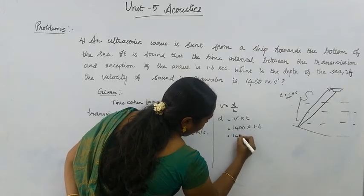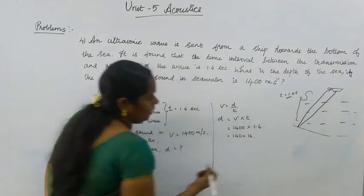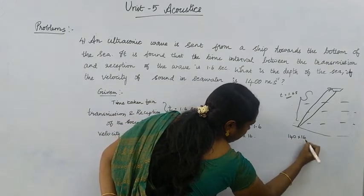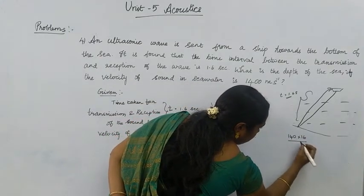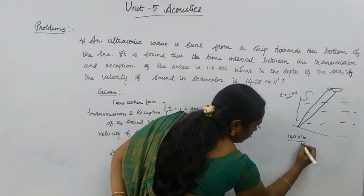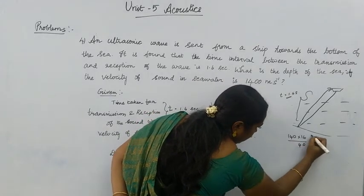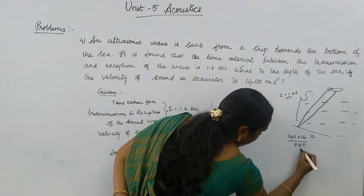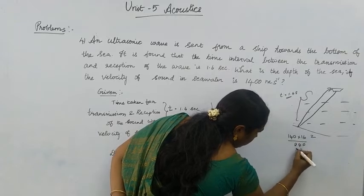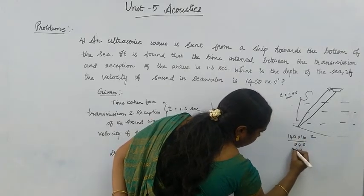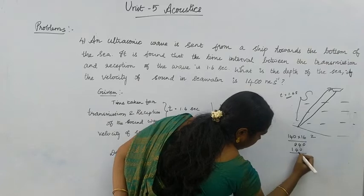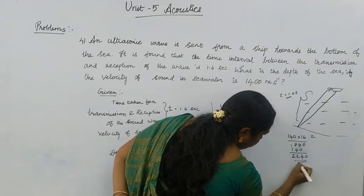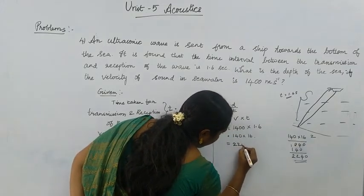So, 1400 multiplied by 1.6. Let's do the calculation: 1400 into 16. Working through the multiplication: 6 × 4 = 24, carry 2; 6 × 1 = 6, plus 2 = 8; then 1 × 4 = 4; 1 × 1 = 1. The result is 2240.